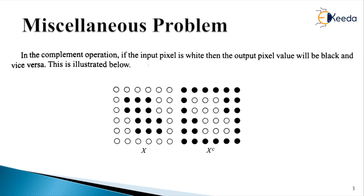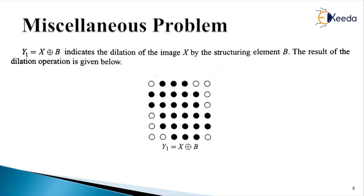In part two, we find image Y1 obtained by the dilation operation of X by structuring element B. Here we have input image X and we perform the dilation to get the corresponding output. So Y1 equals X dilated by B. Comparatively, there were initially only 12 pixels with dark color, and because of the dilation the object area has got enlarged with more dark pixels in all directions: upward, downward, left, and right.